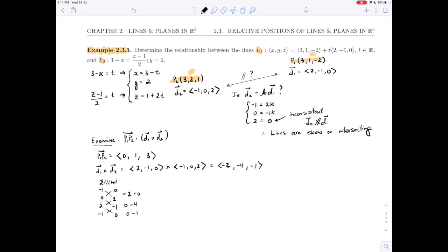So the triple scalar product p1, p2 dotted with d1 crossed with d2 is, so p1, p2 is 0, 1, 3 dotted with minus 2, 4, minus 1, or 0, minus 4, minus 3 is equal to minus 7. And in particular, that is not 0.